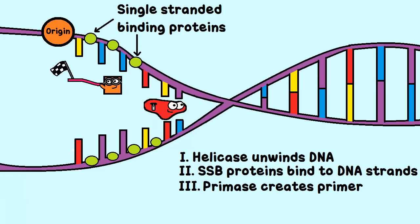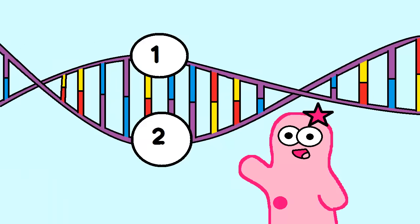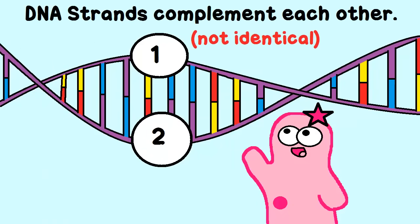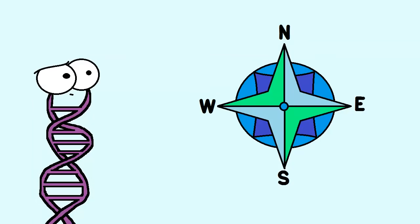That's really important because otherwise, when DNA polymerase comes in, it wouldn't know where to start. Now DNA polymerase can get to work — it's the important enzyme that adds DNA bases. Now, you have two strands, right? They're not identical. Remember, they complement each other. They also are anti-parallel, so that means they don't really go in the same direction.